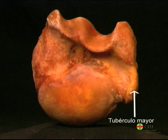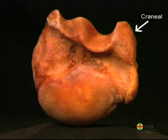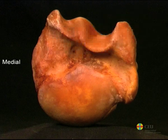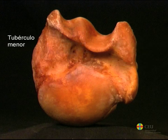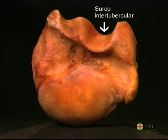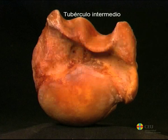Cranio-laterally to the joint area is the greater tubercle, in which two parts can be distinguished: one cranial for the insertion of the supraspinous muscle, and another caudal for the insertion of the infraspinous muscle. Medially to the joint area is the lesser tubercle, which gives insertion to the supraspinous, subscapular, and deep pectoral or ascending muscles. The bicipital groove is located between the cranial part of both tubercles, a space covered by cartilage through which the tendon of the biceps brachii muscle runs. In horses, this groove is divided by the presence of an intermediate tubercle.